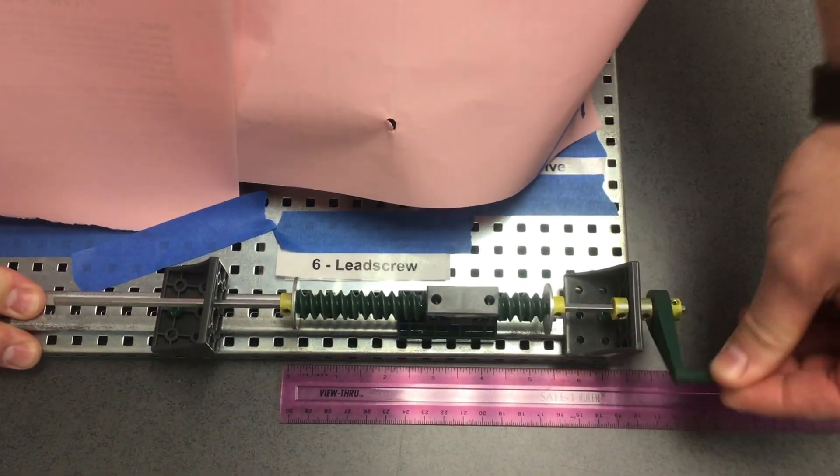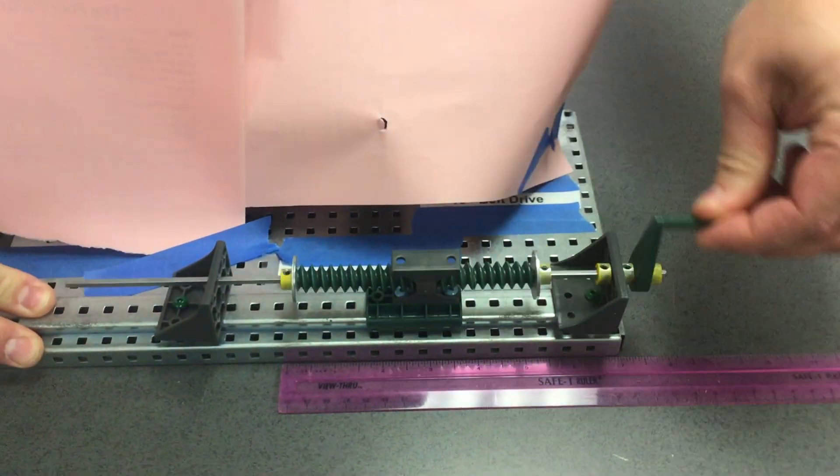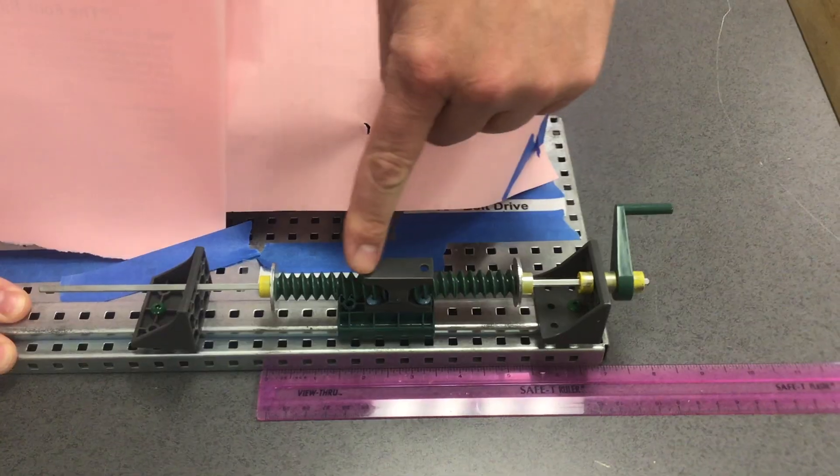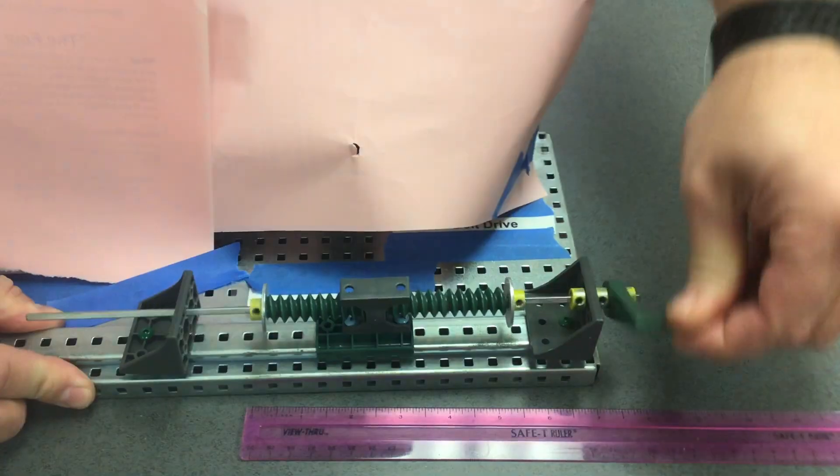I turn this handle in a rotary manner, and this carriage will move down the mechanism as I turn it.